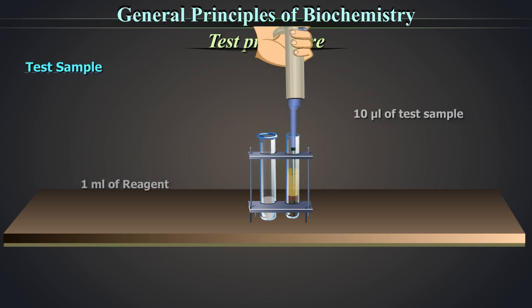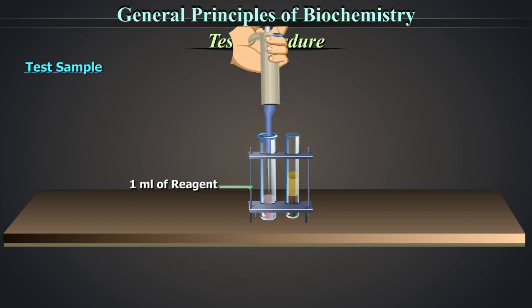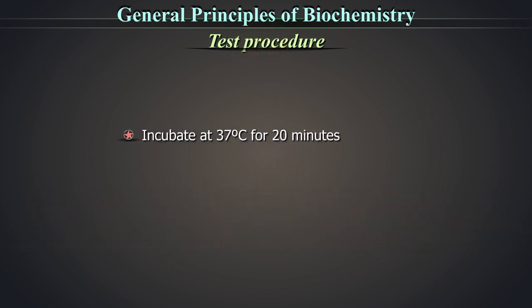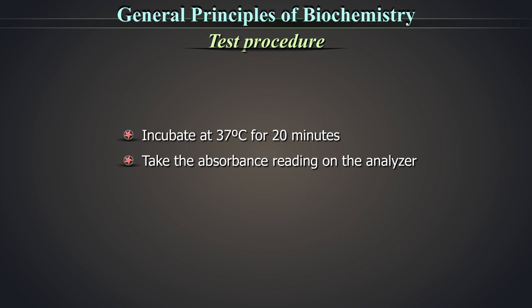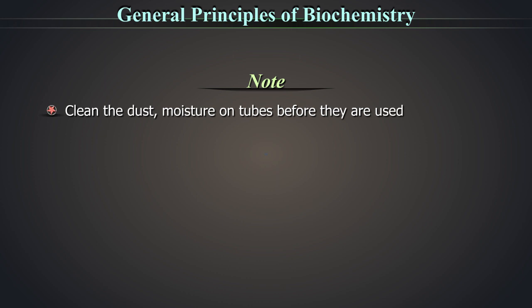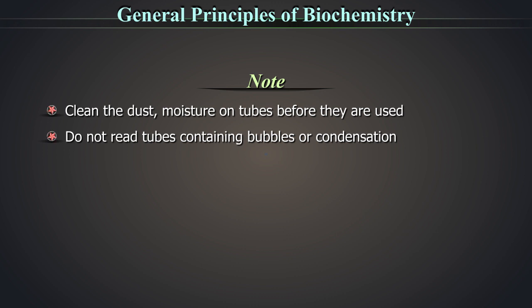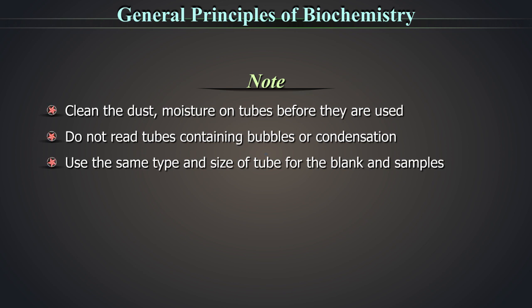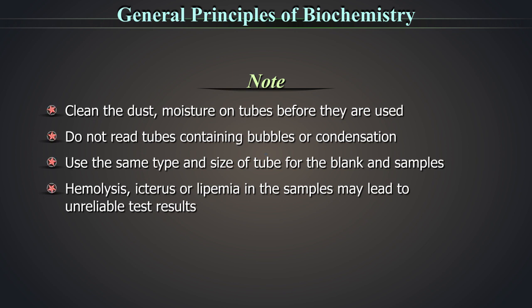Add 10 microliters of test sample to 1 ml of reagent. Incubate at 37 degrees Celsius for 20 minutes or as recommended by the manufacturer. Take the absorbance reading on the analyzer. Clean the dust and moisture on tubes before they are used. Do not read tubes containing bubbles or condensation. Use the same type and size of tube for the blank and samples. Hemolysis, icterus, or lipemia in the samples may lead to unreliable test results.